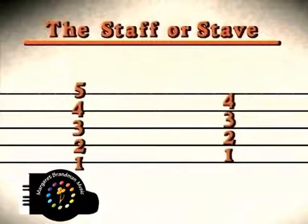Music is written on a set of five lines and four spaces known as a staff or stave. The lines and spaces are numbered from bottom to top.